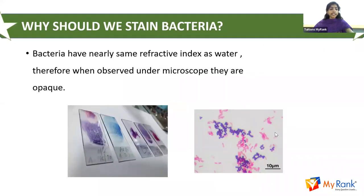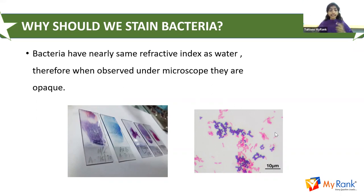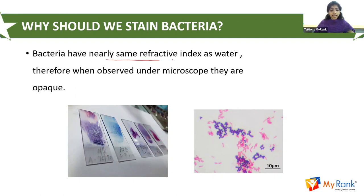Why should we stain bacteria? Since bacteria are transparent and colorless, they would not be visible to the naked eye. They are invisible to the naked eye, and if observed under the microscope, they cannot be seen clearly. Different kinds of staining methods are used to make these cells visible under the microscope. Bacteria have nearly the same refractive index as water; therefore, when observed under the microscope, they appear opaque.